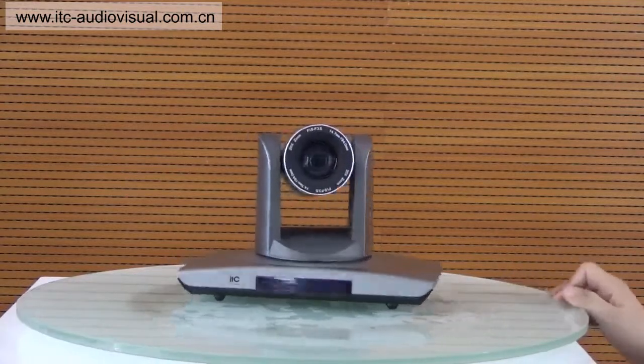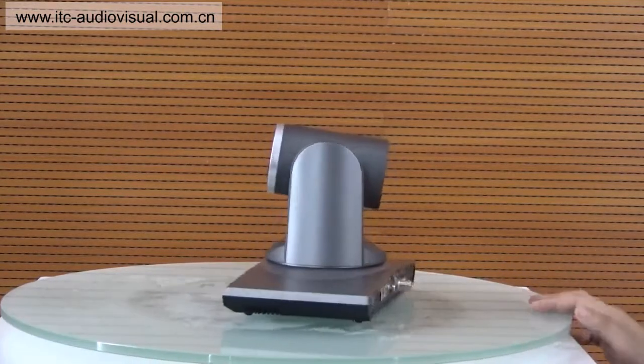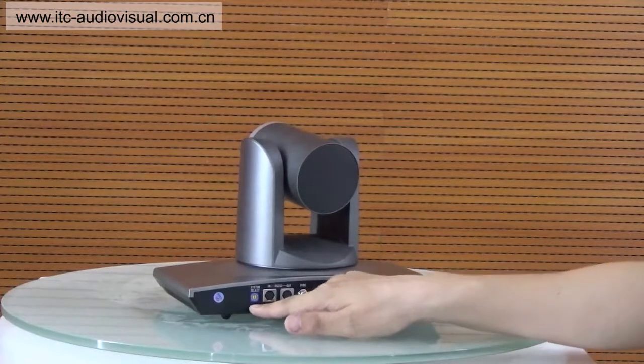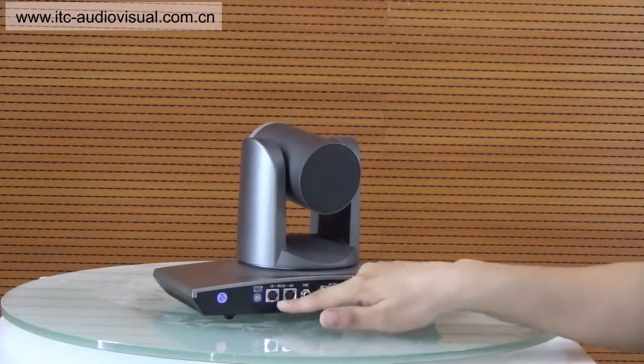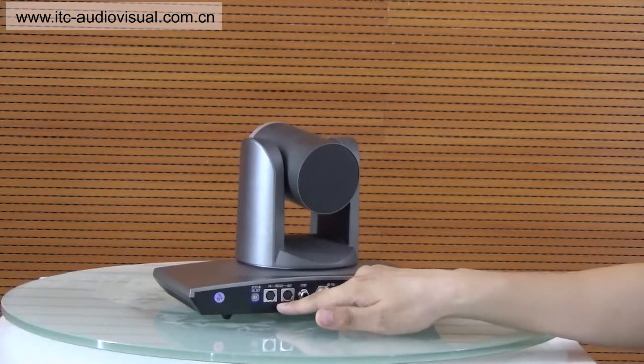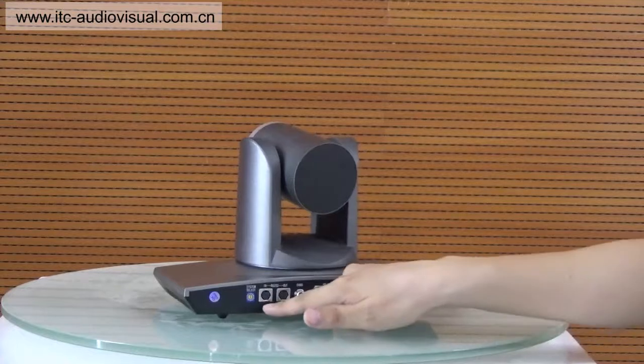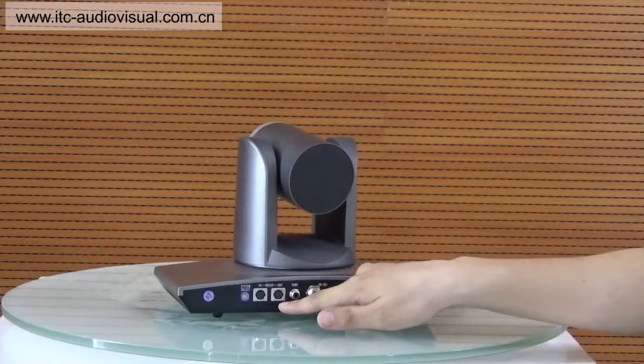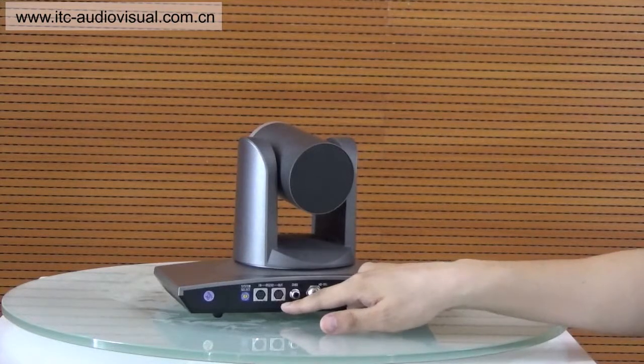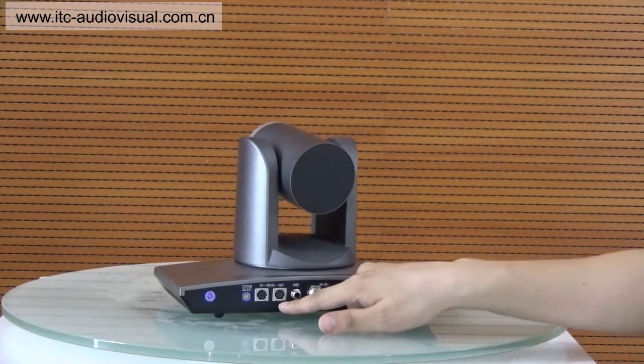Second, let's talk about the rear panel of the video conference camera. The knob is for you to adjust the definition, and these two serial ports are for the control signal. One is for input and the other is for output. The output signal could be used to cascade with other video conference cameras.